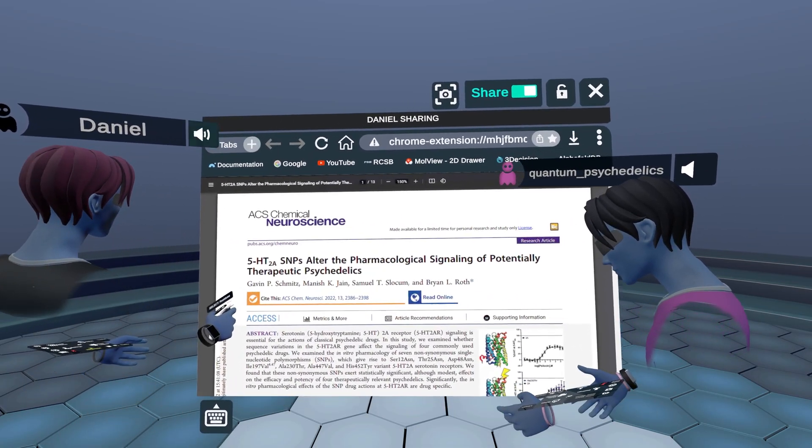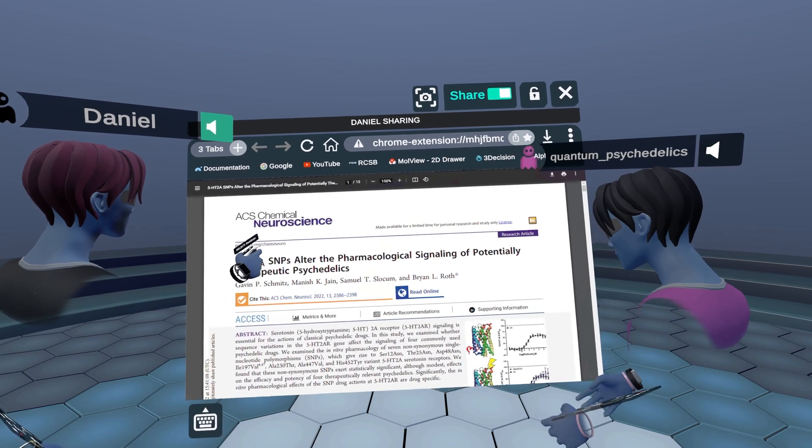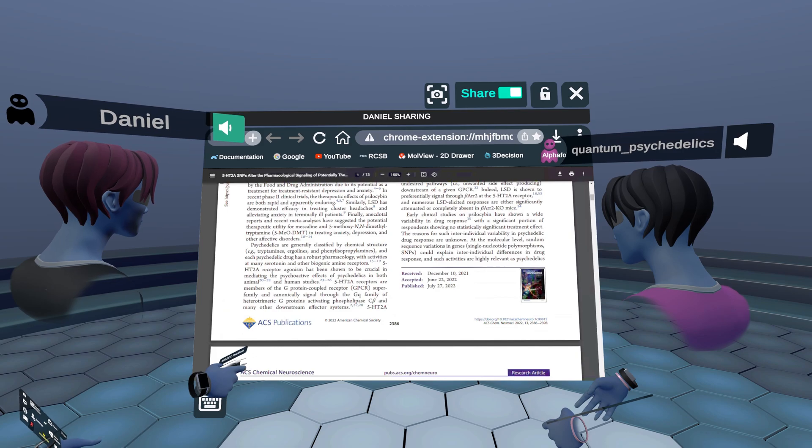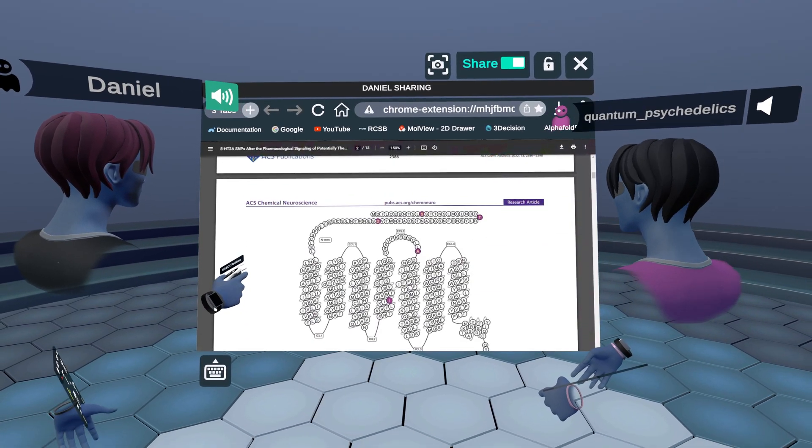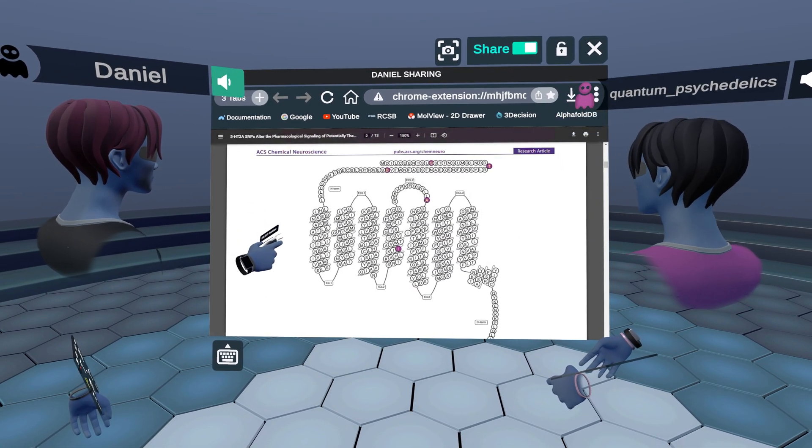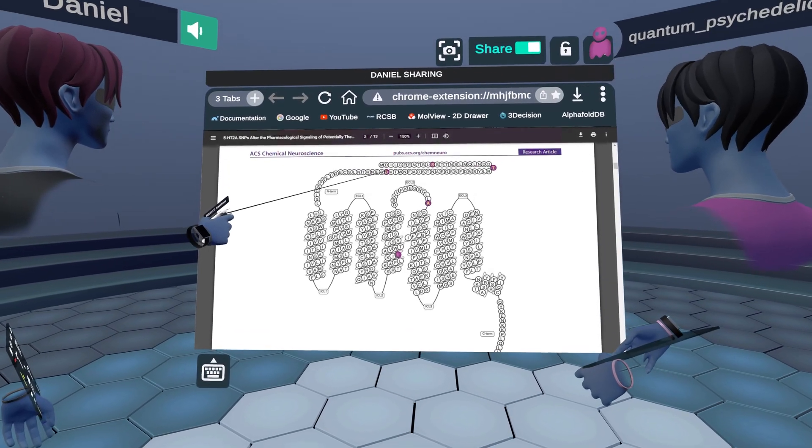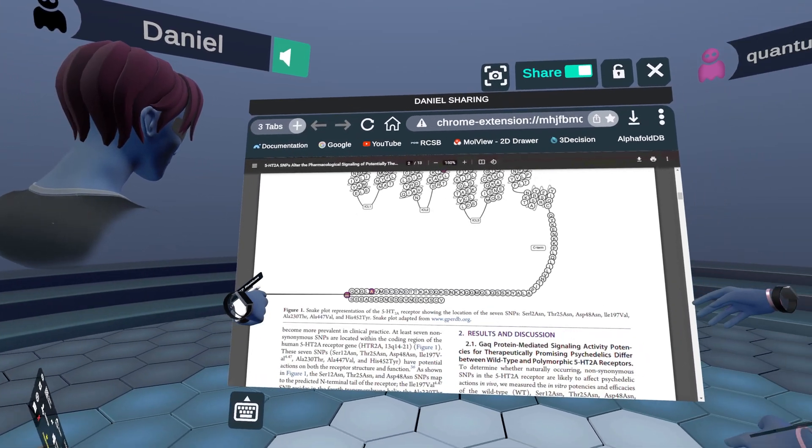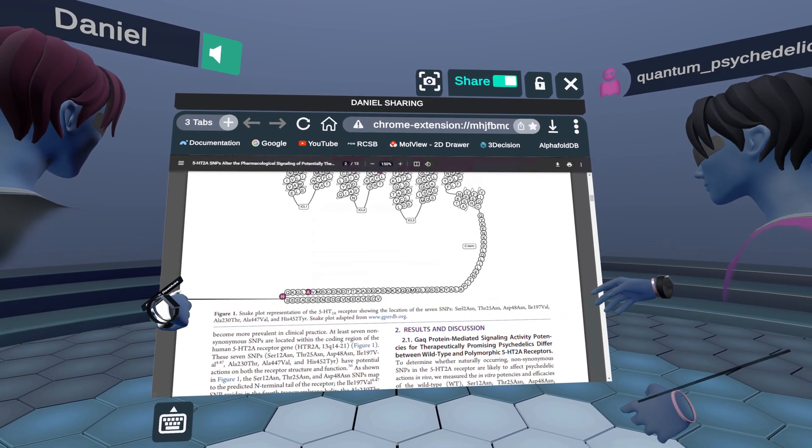So here we have the paper again. And I'm just going to scroll down to the first figure, which is a snake plot showing all the mutated amino acids in pink. As you can see here, this is the extracellular domain. And down here, this is the intracellular domain,